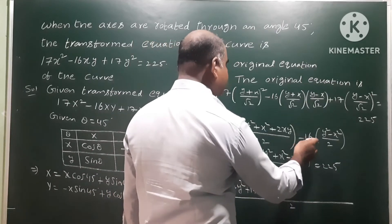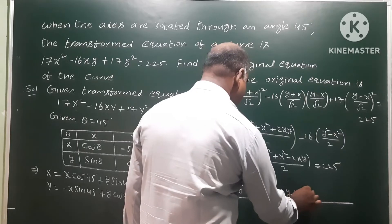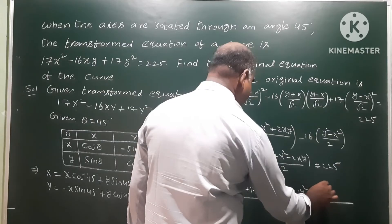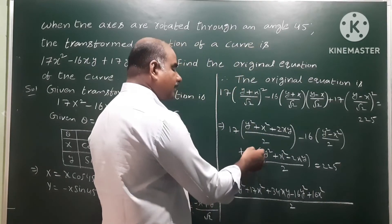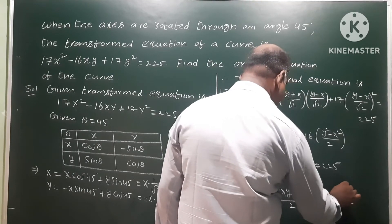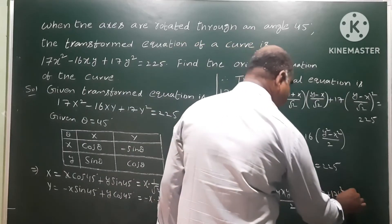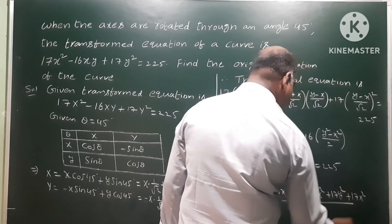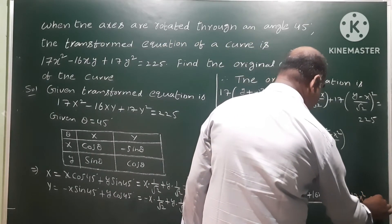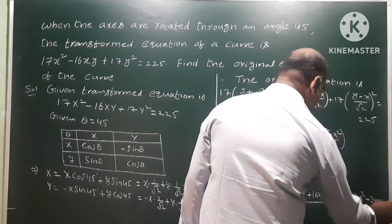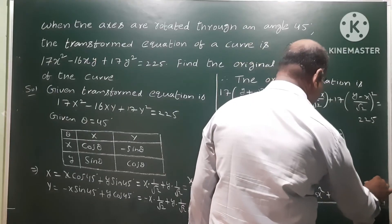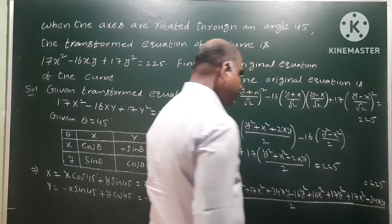Expanding the terms over denominator 2: 16·y² (from -(-) = +) + 16·x², then 17·y² and 17·x². The cross terms: minus 17·(34xy) — expanding all squared and product terms, the result equals 225.